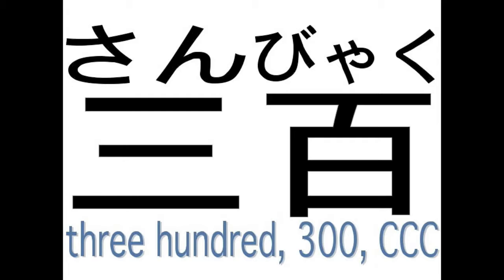Interestingly enough, sanbyaku is also used to mean many. It doesn't literally mean many, but if you want to say — like in English we say, 'Oh, there were a thousand of them' or 'There's a million things I have to do for homework' — they tend to use sanbyaku. There are three hundred things I have to do for homework. They just use this number a lot.